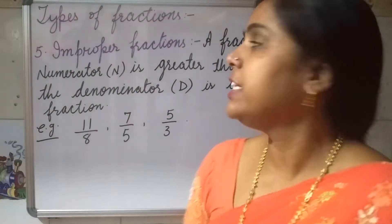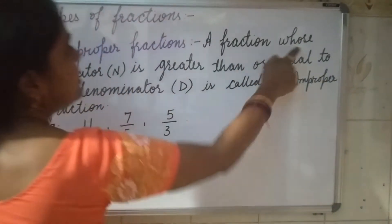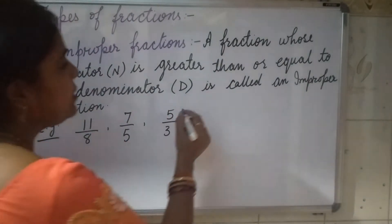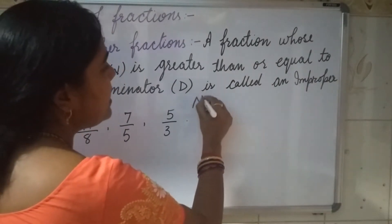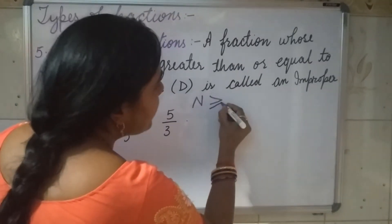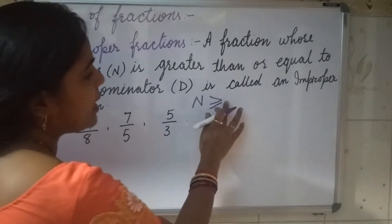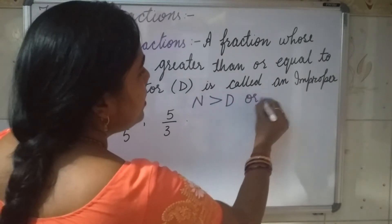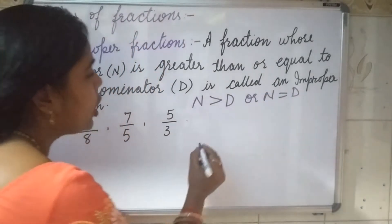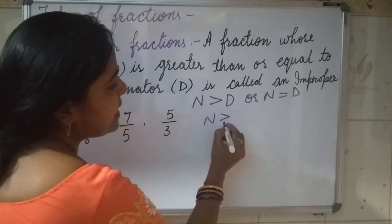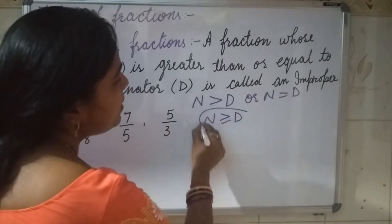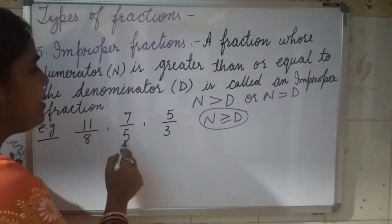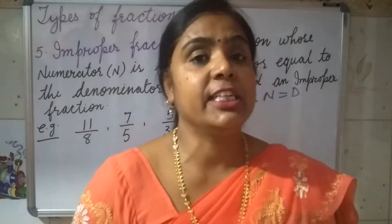The fifth type of fraction is improper fraction. A fraction whose numerator is greater than or equal to the denominator is called an improper fraction. So the condition is: numerator is greater than or equal to denominator — meaning numerator greater than denominator, or numerator equal to denominator. Examples: 11/8, 7/5, and 5/3. But the problem is improper fraction does not exist in nature.